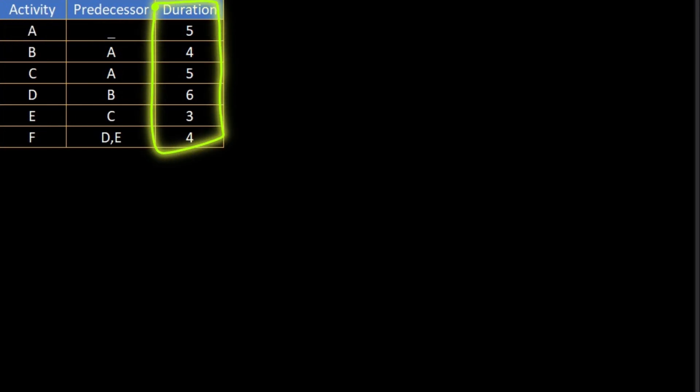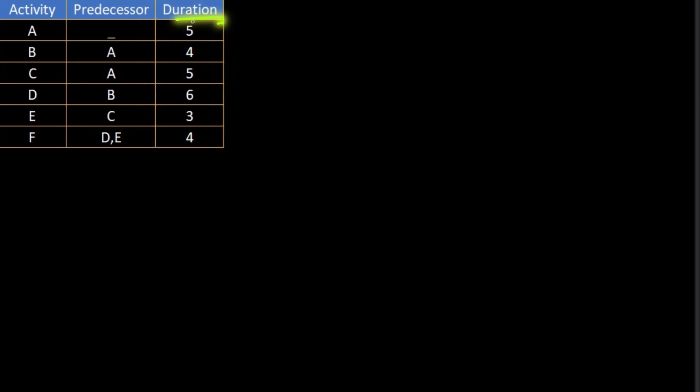In the third column there is the duration of the activities. It can be taken as weeks, days, or months. We assume them as weeks here in this example. Firstly we need to make a node diagram of it. The project starts with activity that has no predecessor, that is A.